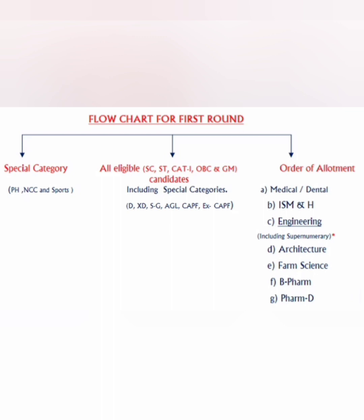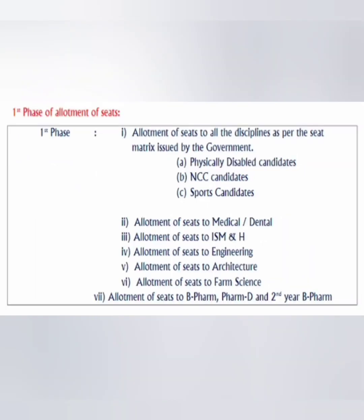Your option entry can include one or two options from engineering, one or two from architecture, and a few from B Pharma courses. That's why this order is decided. The allotment will happen in the same order: first to physically handicapped candidates, then NCC candidates, then sports candidates, then medical, dental, ISMH, engineering, architecture, and farm sciences, and last to B Pharma.